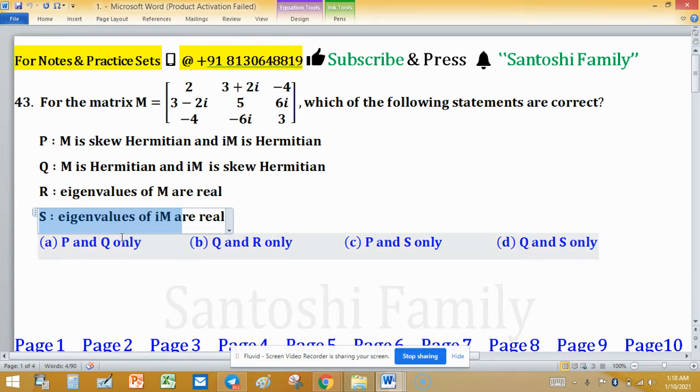Here, four options are associated with this problem and we have to find which option is correct. First, statement P is saying about Hermitian or skew Hermitian for matrix M.